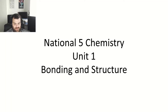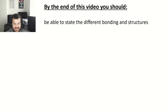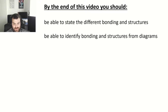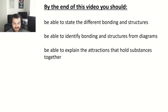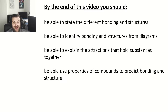In this video we'll talk through the bonding and structure topic from National Five Chemistry Unit One. By the end of this video you should be able to state the different types of bonding and structure, identify these from diagrams, explain the attractions that hold substances together, and use properties of compounds to predict bonding and structure.